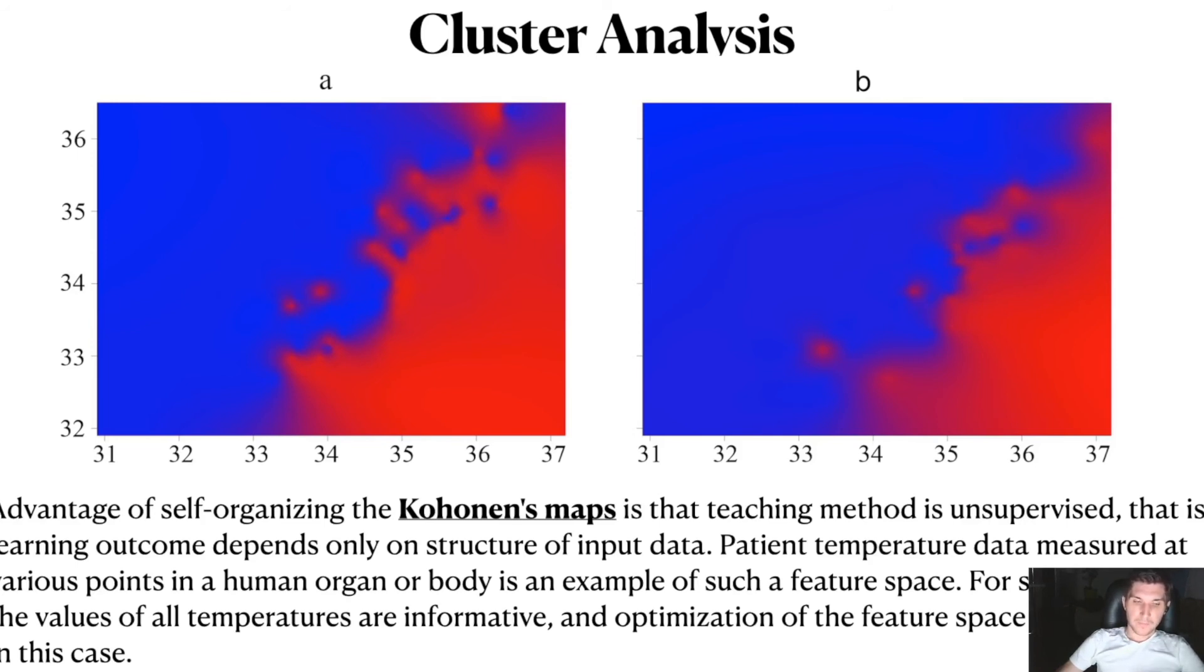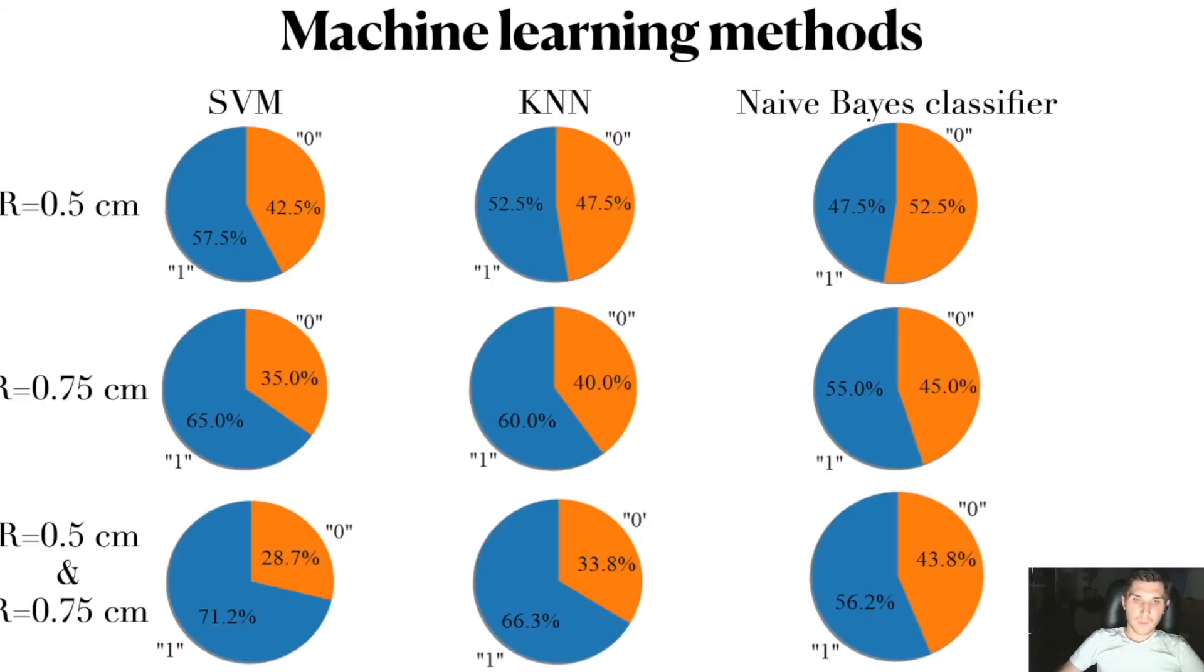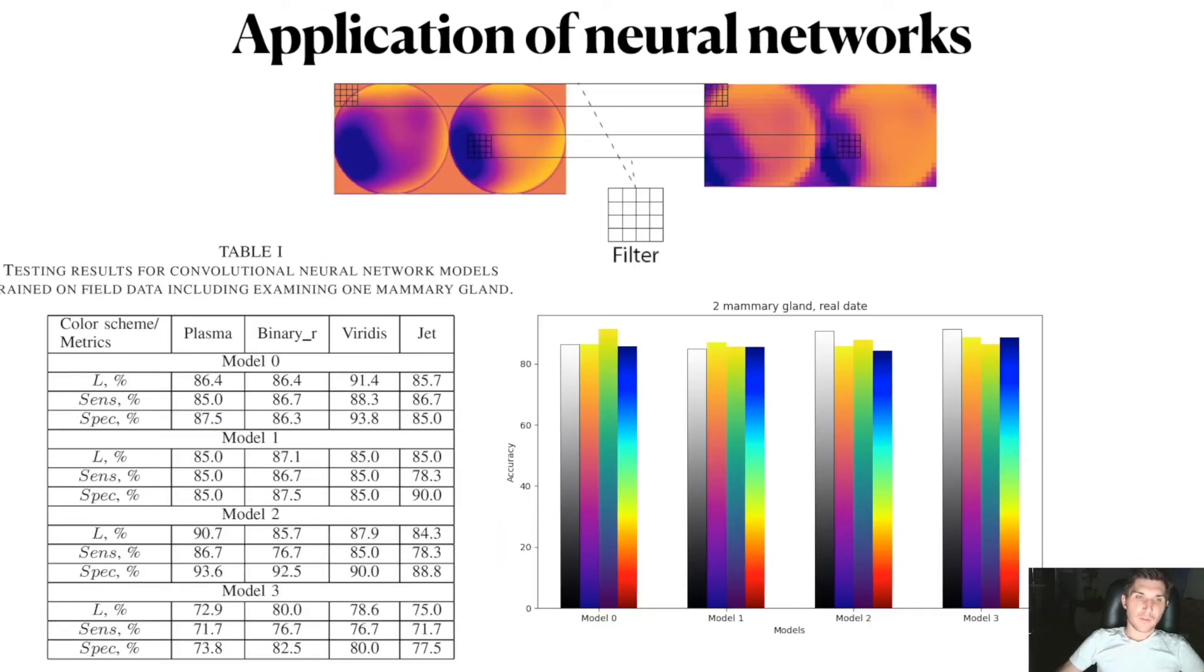This technique is universal and can be extended to models of other organs. The basic machine learning algorithms were applied to determine the dependence of diagnosis accuracy on the tumor radius R. The results show a significant effect of tumor size on quality of medical diagnosis.